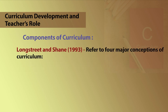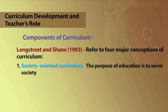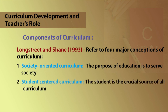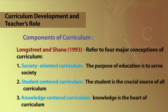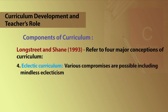Longstreet and Shen refer to four major conceptions of curriculum. Number one, society-oriented curriculum, of which the purpose of education is to serve society. Second, student-centered curriculum, where the student is the crucial source of all curriculum. Third, knowledge-centered curriculum, which tells that knowledge is the heart of curriculum. And fourth, eclectic curriculum, which tells that various compromises are possible, including mindless eclecticism.